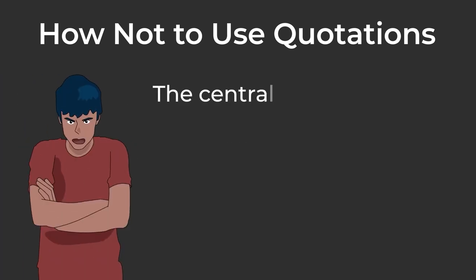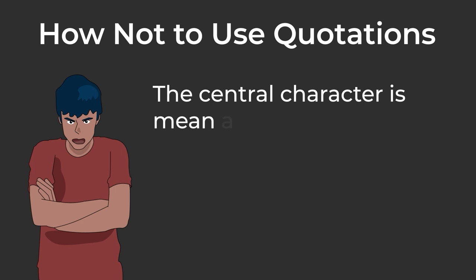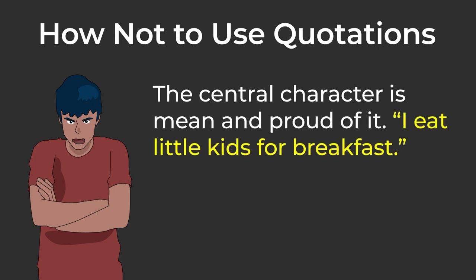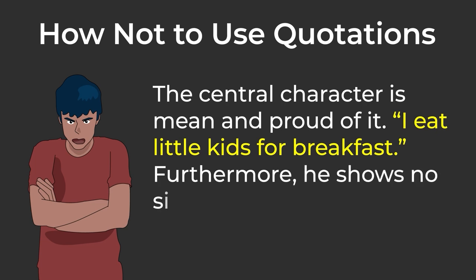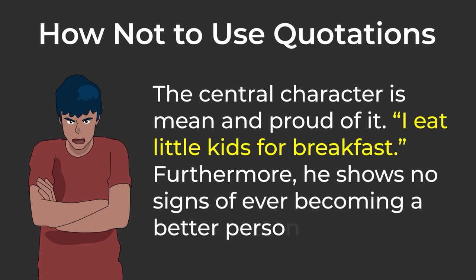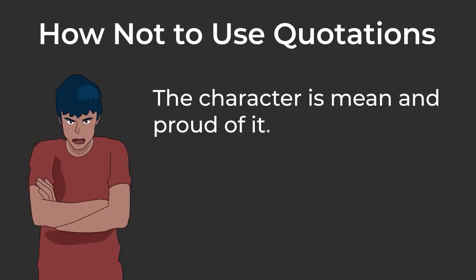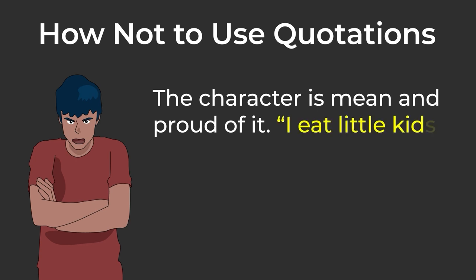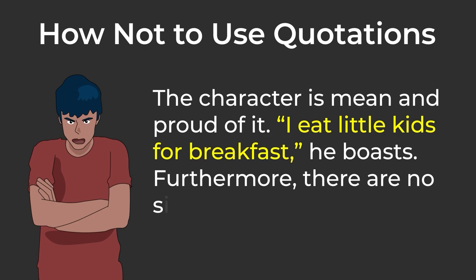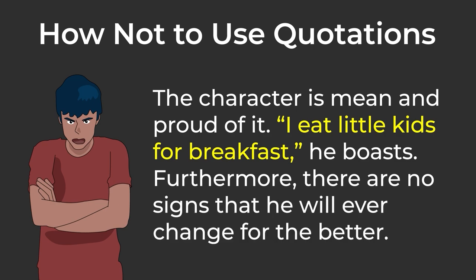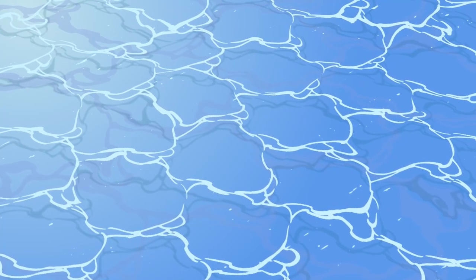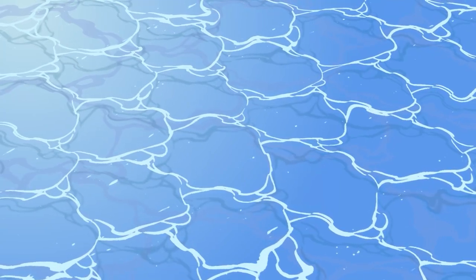It disrupts the flow of the writing. Here's how not to do it: "The central character is mean and proud of it. 'I eat little kids for breakfast.' Furthermore, he shows no signs of ever becoming a better person." Splash. This is the better way: "The character is mean and proud of it. 'I eat little kids for breakfast,' he boasts. Furthermore, there are no signs that he will ever change for the better." When integrating quotations into your writing, it's good to go with the flow.